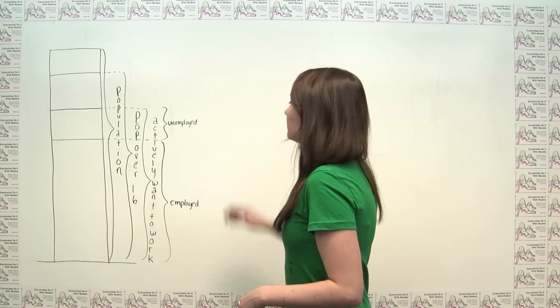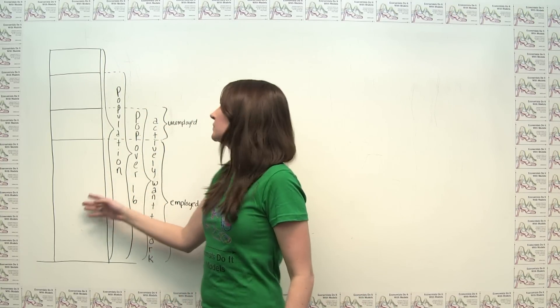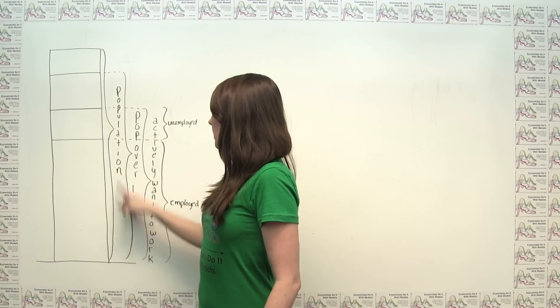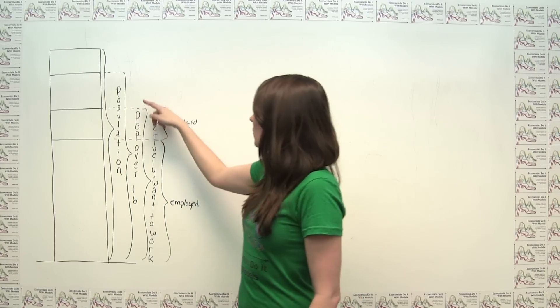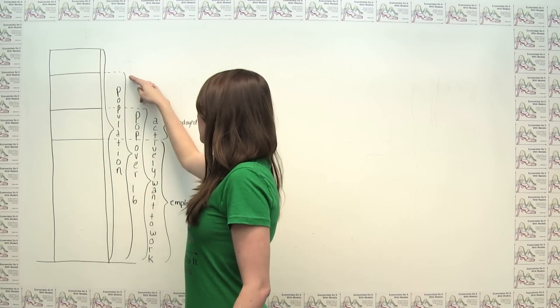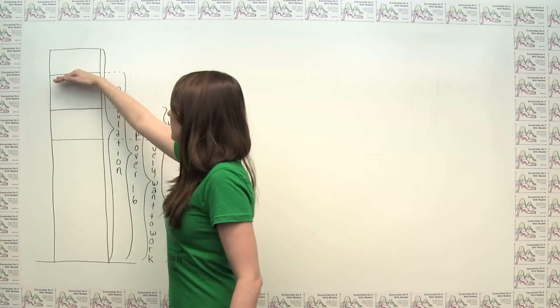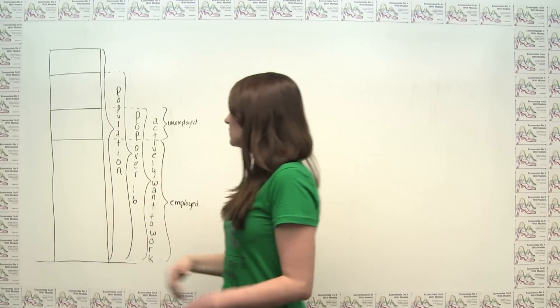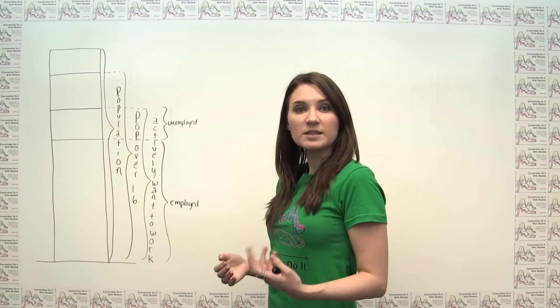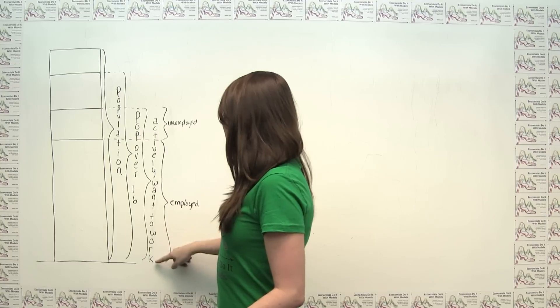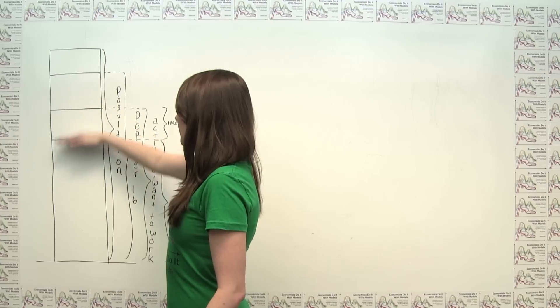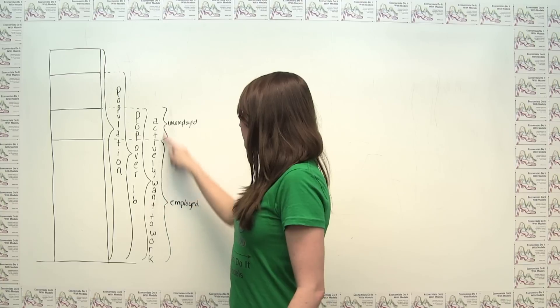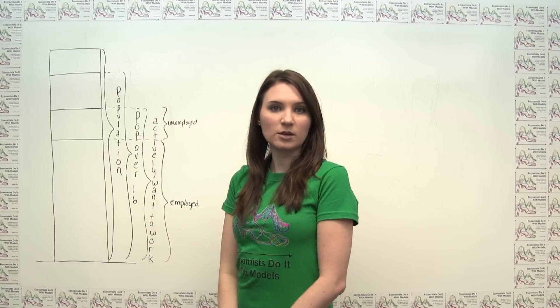So we can think about the breakdown of our population here. This total bar represents the overall population. Not all of those people are over 16, so we can think about the subset of the population that's over 16. We can then think about that subset that is, in fact, actively looking for work or working. It's this actively wanting to work subset that's actually what's counted as our labor force.